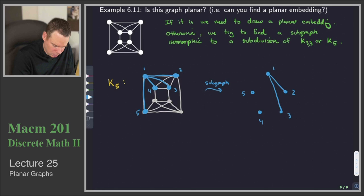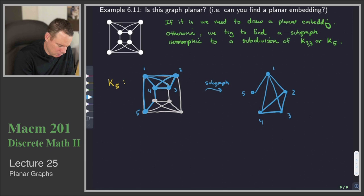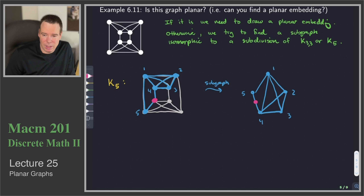What about vertex 2? Vertex 2 connects to 3 and 4. Vertex 3 connects to 4 — I've got that edge. And vertex 4 connects to 5. The problem is vertex 4 doesn't connect directly to vertex 5 in my graph. What it does do, however, is connect through another vertex. So I can get a path from 5 to 4 — it just has a vertex sitting on it. So it's a subdivision.